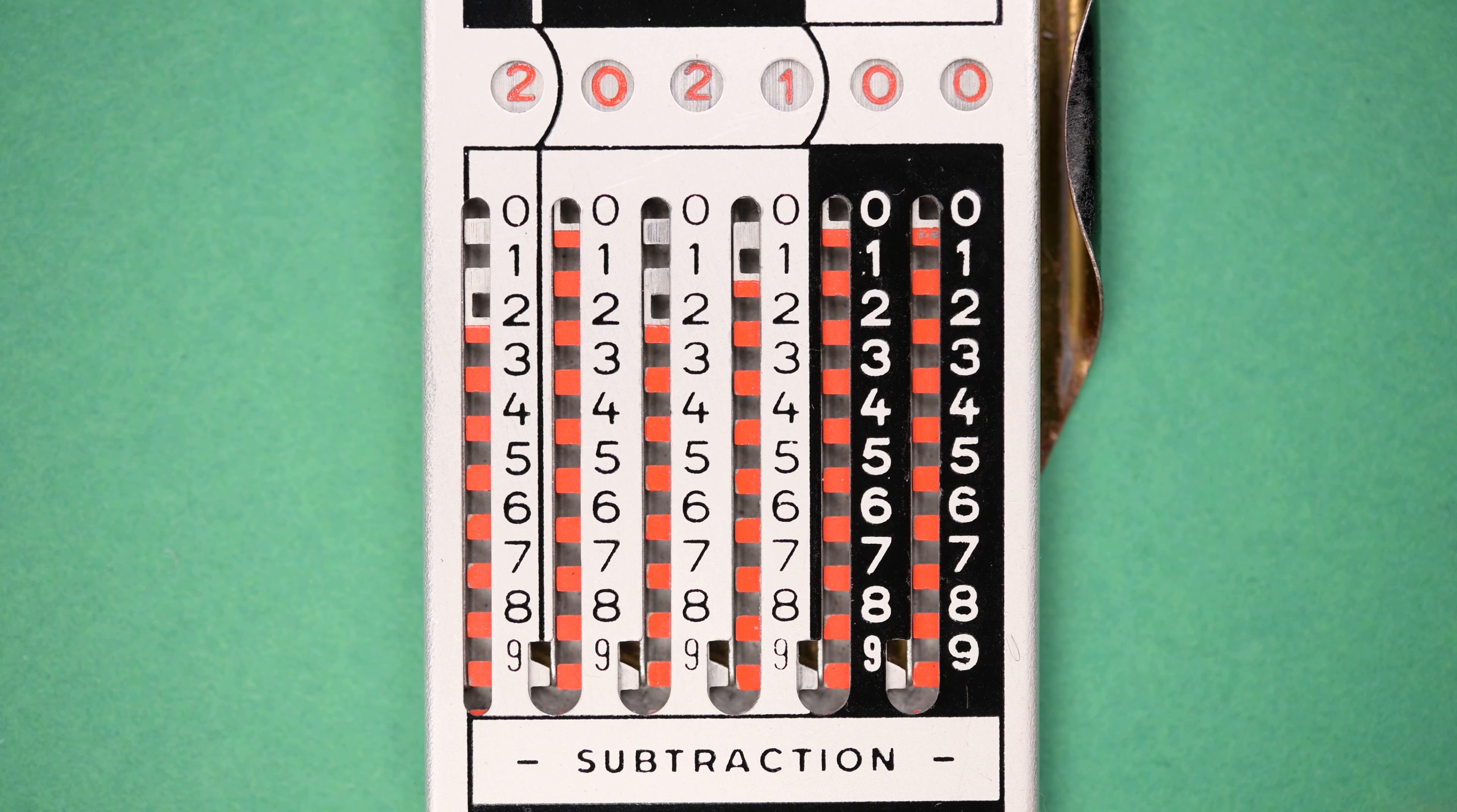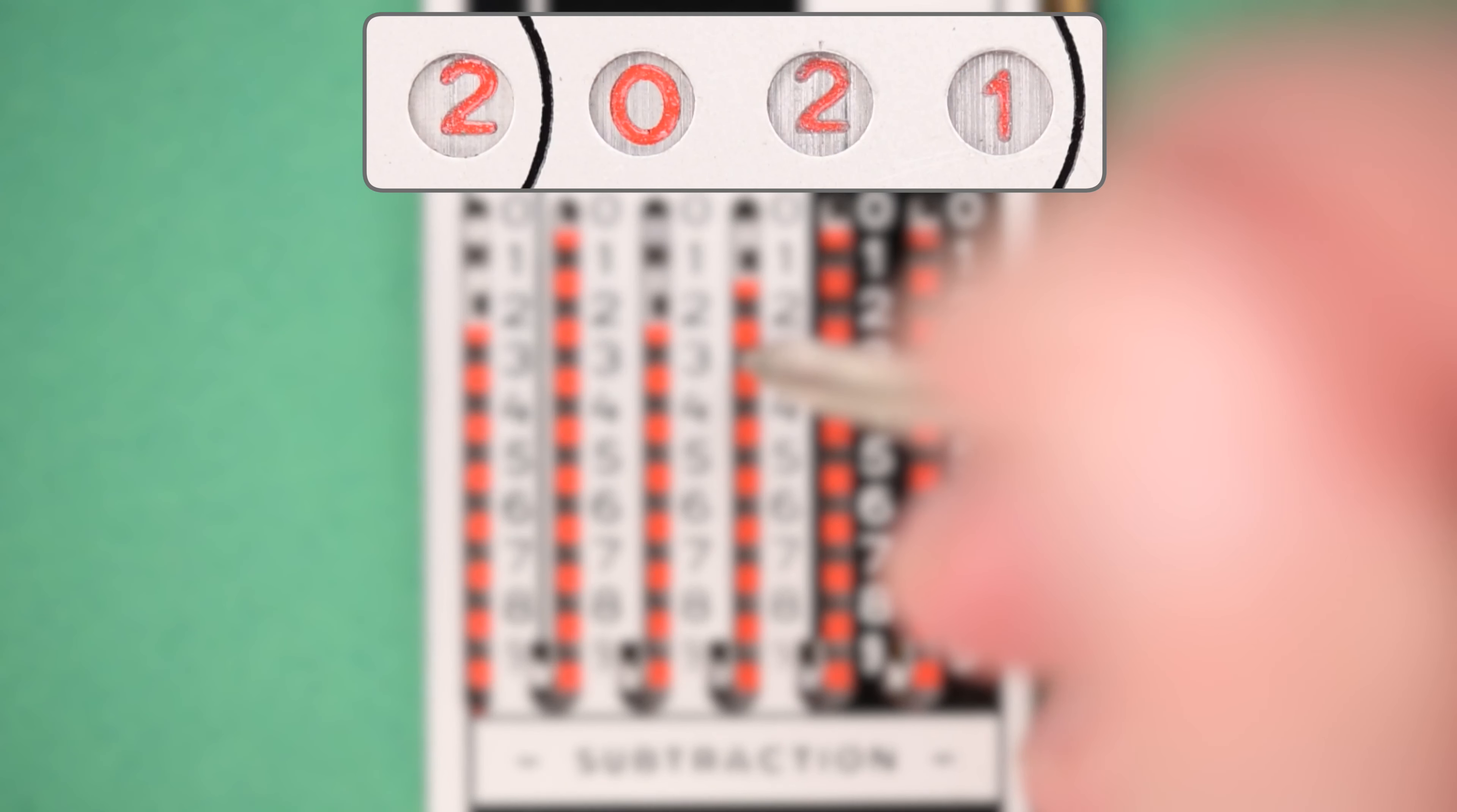So subtraction is virtually the same as addition on the Adiator. For this purpose, it has a mirrored set of columns below the numbers that is simply upside down. Subtracting numbers means moving the columns up rather than down, and carry works the same way.